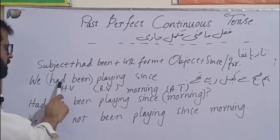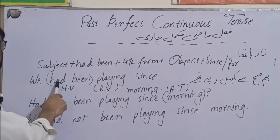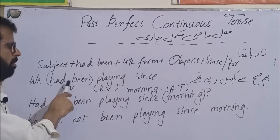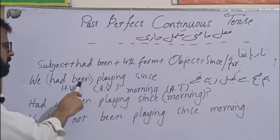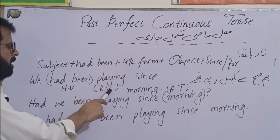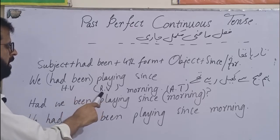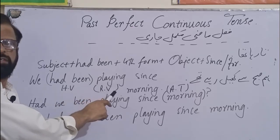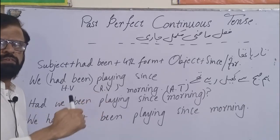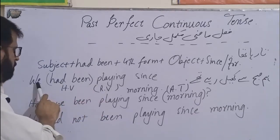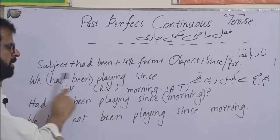This is the Past Perfect Continuous structure showing had been in the bracket. R and V is the regular word. This is the principal word or the real word. This is the word which is the subject of the sentence.